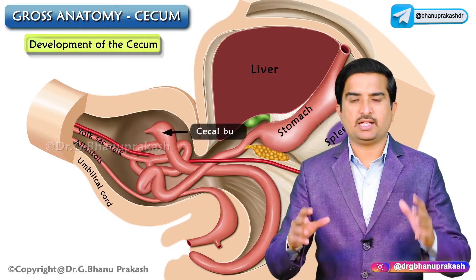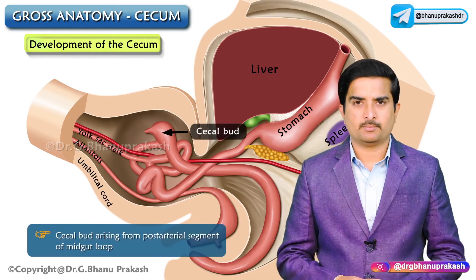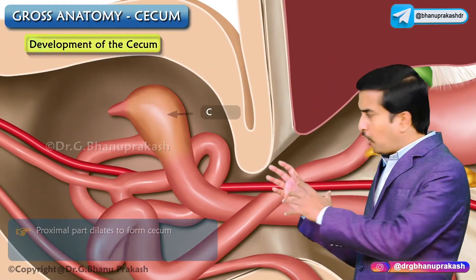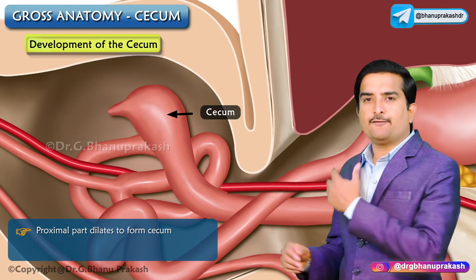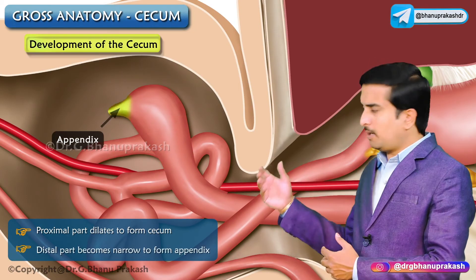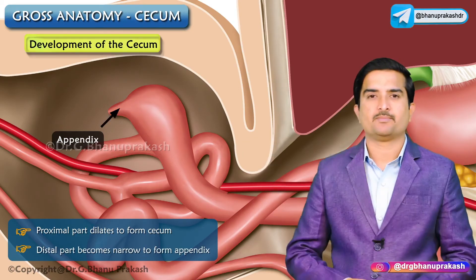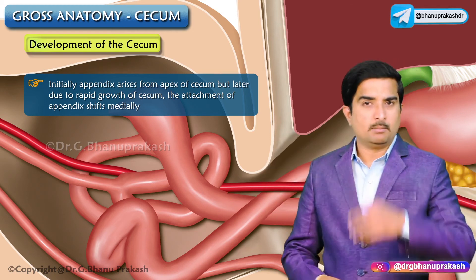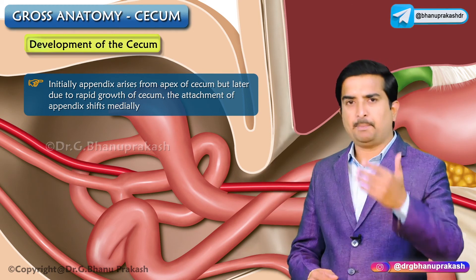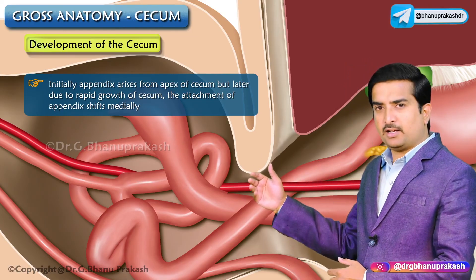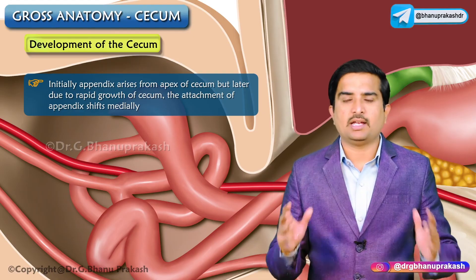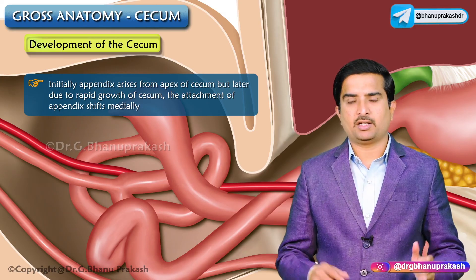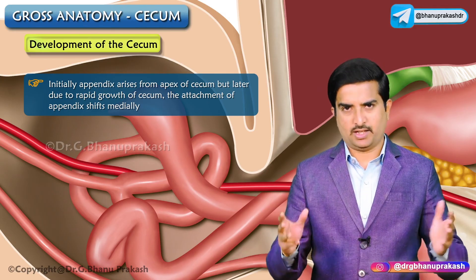The cecum and appendix develop from the cecal bud arising from the post-arterial segment of the midgut loop. The proximal part of the bud dilates to form the cecum, and the distal part becomes narrow and forms the appendix. Initially the appendix arises from the apex of the cecum, but due to the rapid growth of the cecum, the attachment of the appendix shifts medially. This completes all the important points about the cecum.